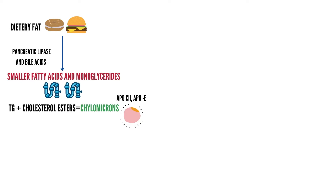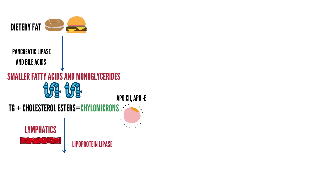If you are grasping lipoprotein synthesis for the first time, you can skip memorizing all apoprotein names, but don't forget C2 and ApoE. C2 is the primary apoprotein for activation of lipoprotein lipase, and ApoE helps in binding to the ApoB100E receptor. These chylomicrons enter the lymphatics and eventually reach systemic circulation through the thoracic duct, then travel to peripheral tissues where hydrolysis of core triglycerides occurs, releasing free fatty acids.